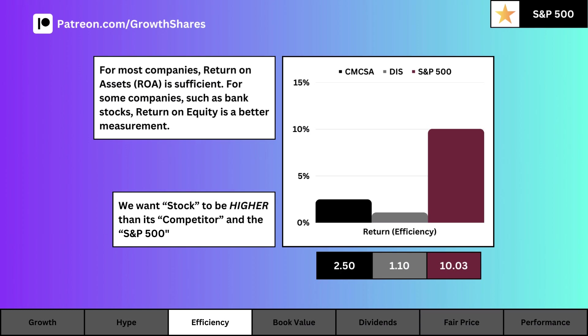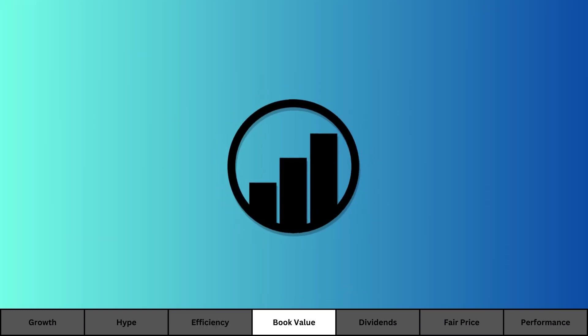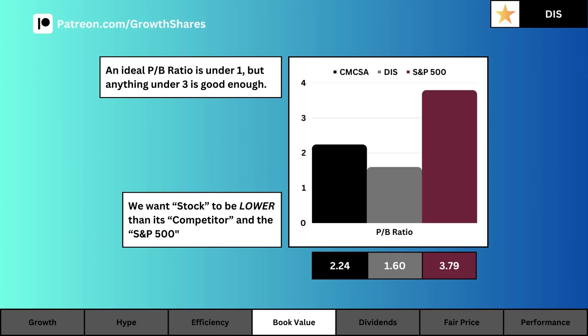Efficiency is how much profit our company is able to generate from its assets, and we measure that with return on assets. For some companies like banks, we'll use return on equity. What you see here is the current ROA or ROE of our company, its competitor, and the S&P 500. What you want is a high return, giving us a more efficient company — or at least one that's better than the S&P 500.